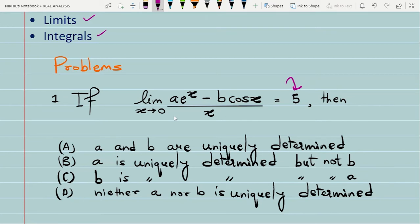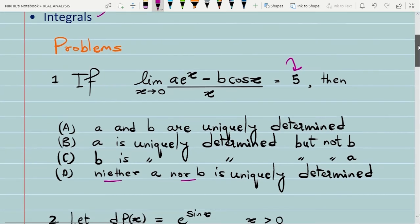The first option says that a and b are uniquely determined - that is, they are unique. In option B, it says that a is unique but b is not - that is, b can assume more than one value. In option C, it says that b is uniquely determined but not a. And finally, in option D, it says that neither a nor b is uniquely determined. They can have more than one value. So, this was the first problem and very interesting problem. We will be using some concepts in between when trying to solve this problem.